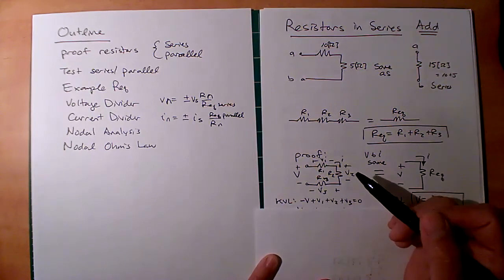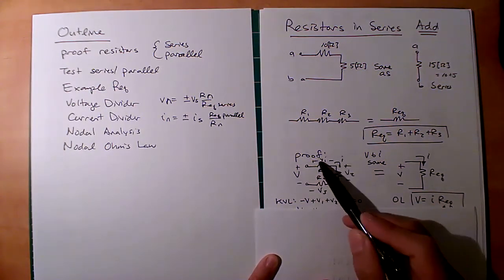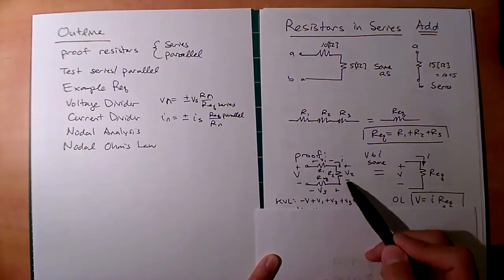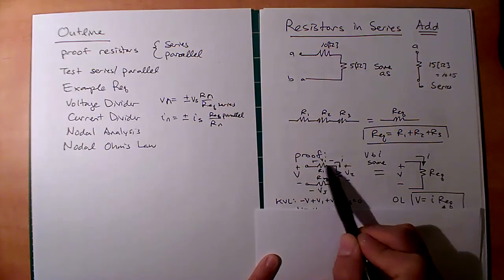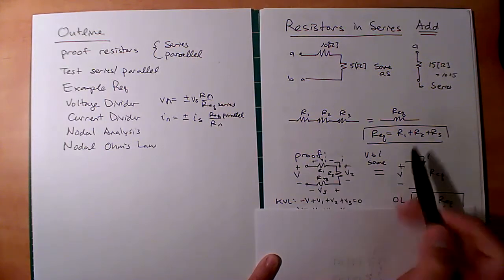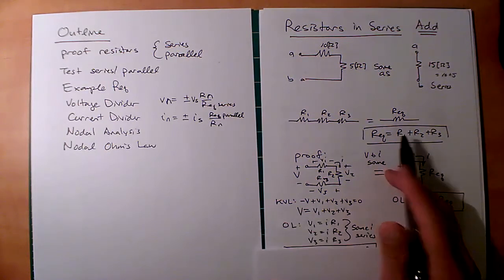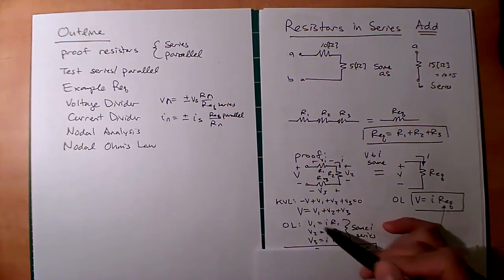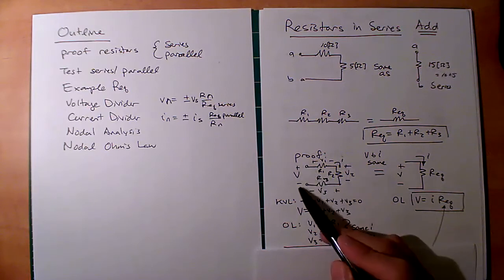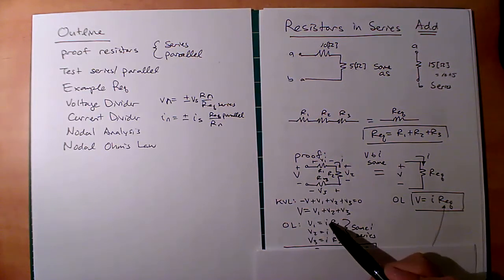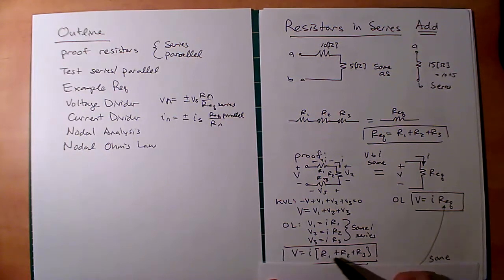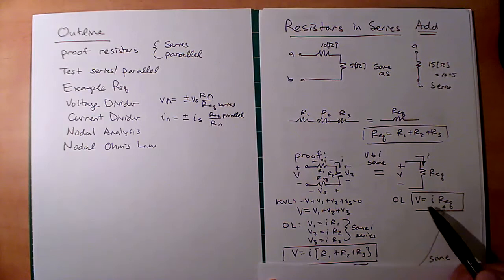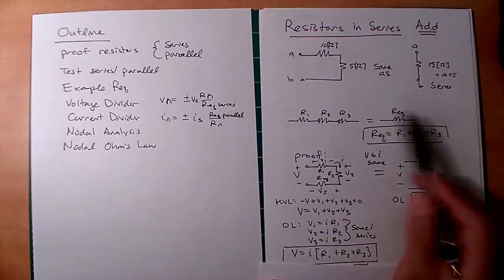Using KVL: -V + V1 + V2 + V3 = 0. Applying Ohm's law individually to each resistor — with current entering the positive terminal — gives V1 = IR1, V2 = IR2, V3 = IR3. Substituting in: V = I(R1 + R2 + R3). For these two systems to be equivalent, R_eq must equal R1 + R2 + R3. This is a simple way to show where this relationship comes from.